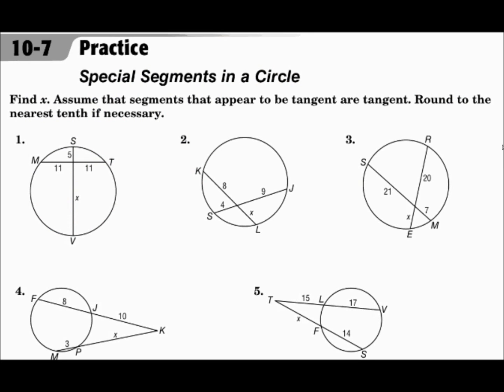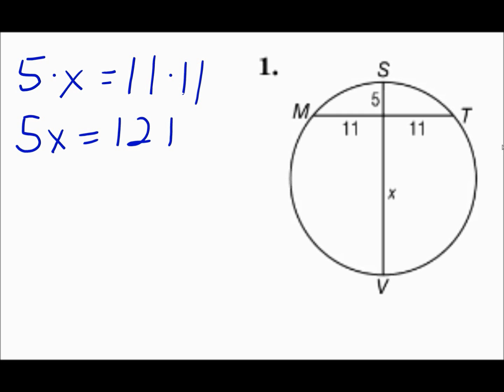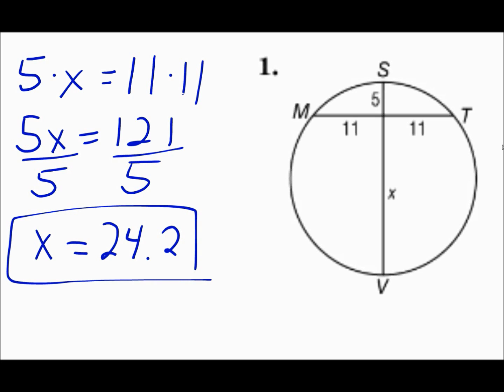Find X. Assume that segments that appear to be tangent are tangent. Round to the nearest tenth if necessary. For question 1, we have two chords that intersect inside the circle. The vertical chord has parts 5 and X. The other chord is broken into pieces 11 and 11. Multiplying: 5X = 11 × 11 = 121. Divide both sides by 5, and X equals 24.2.